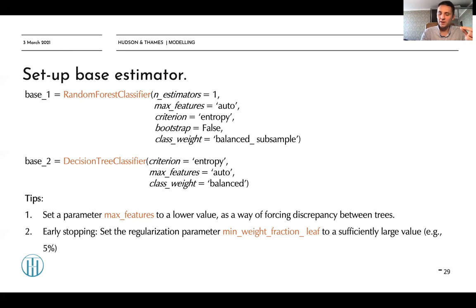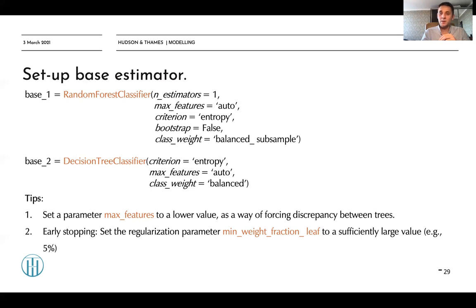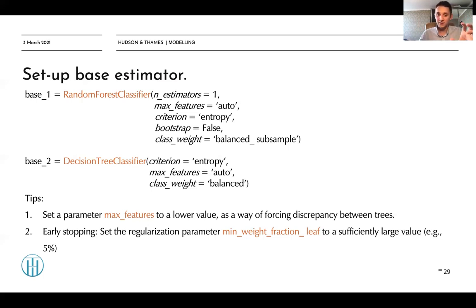You can also set max_samples to the average sample uniqueness of your dataset. Average sample uniqueness is derived from the number of concurrent labels — first you calculate concurrent labels per label, then compute the harmonic mean. If you set max_samples equal to average sample uniqueness, you create a link between the overlap structure of your dataset and the number of samples given to each decision tree in your bagging classifier.